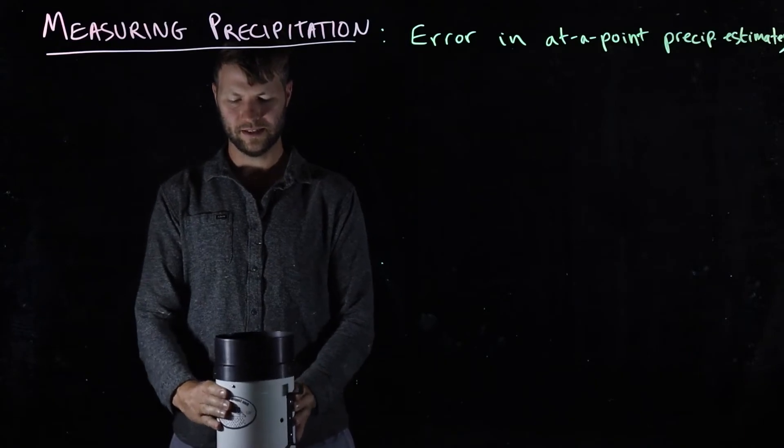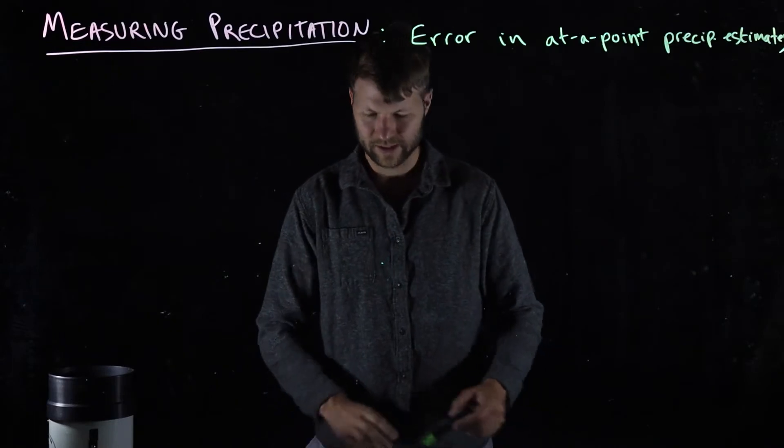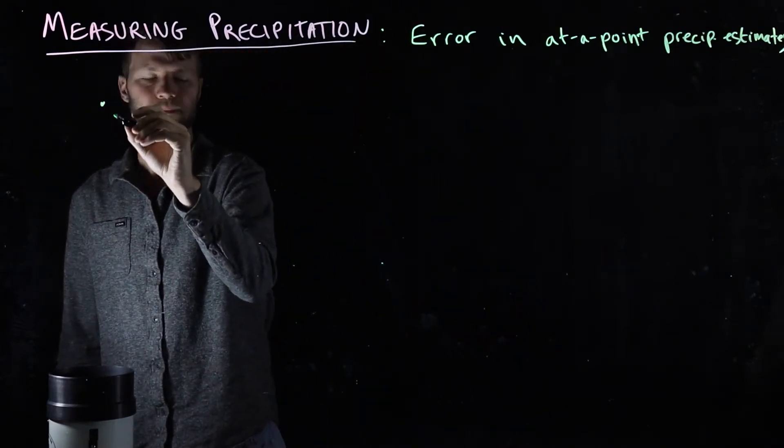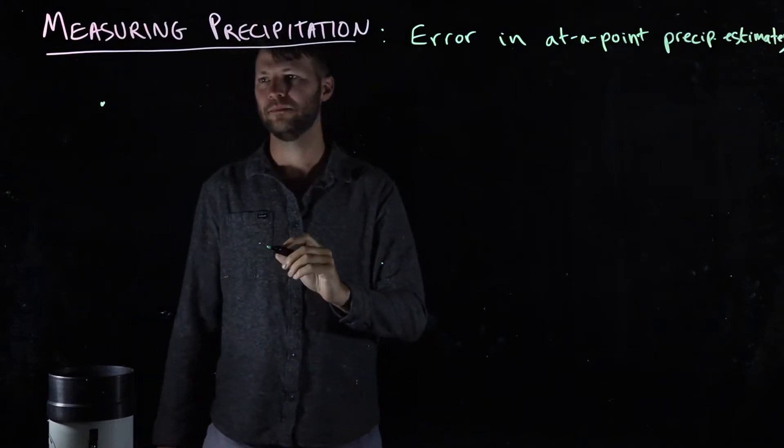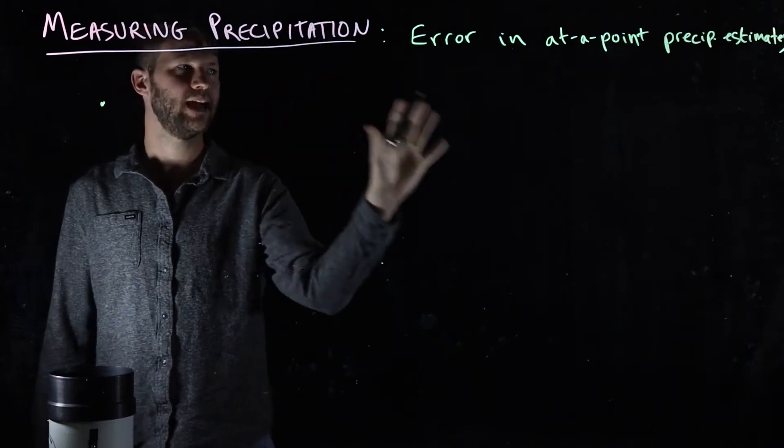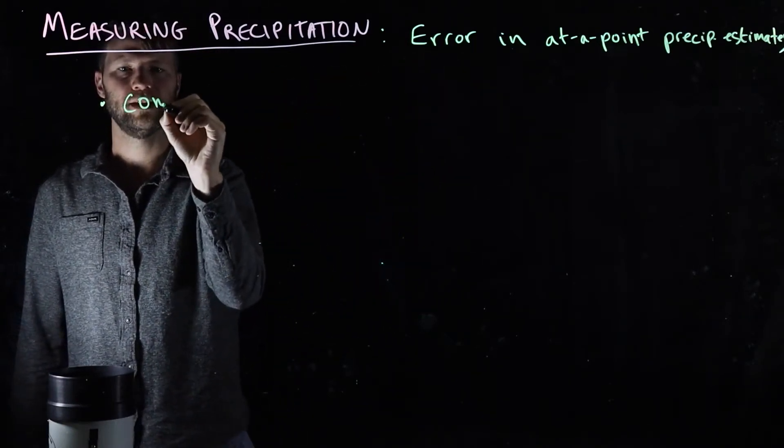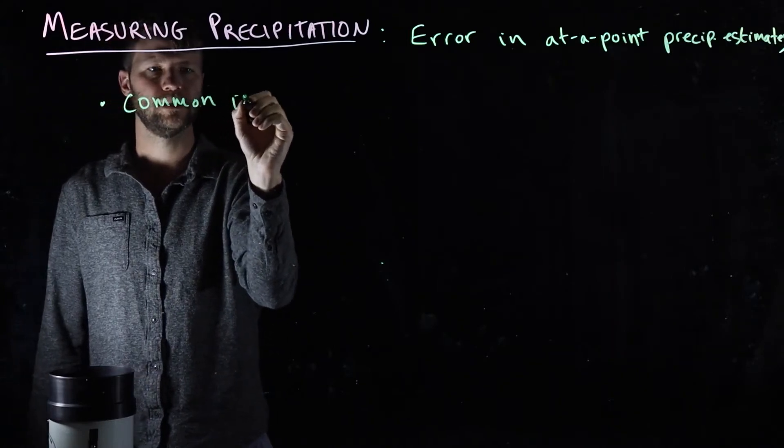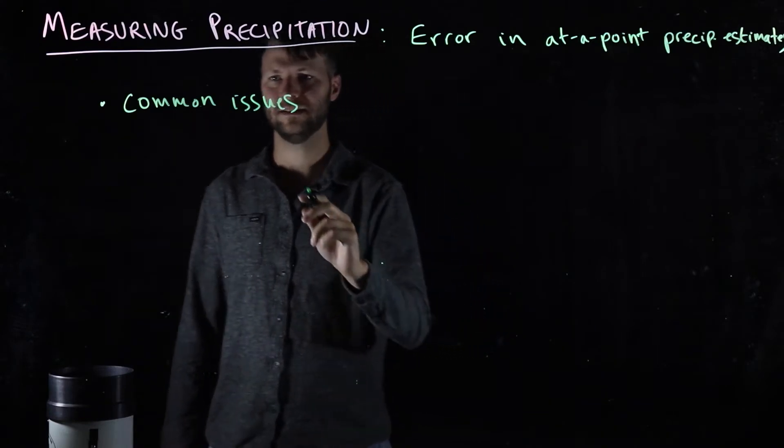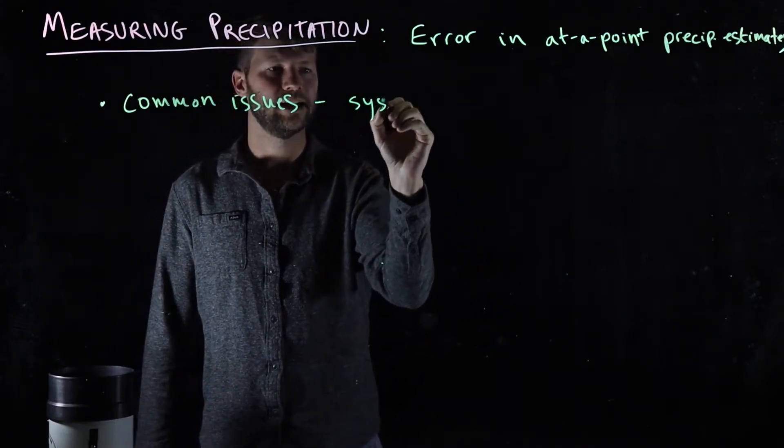So what are the ways that this thing can be in error? Well, the first one is that there may be obstructions that block the rain from getting in here. I'm going to categorize all of these error things as common issues because they're things that everyone needs to deal with, and the error that they tend to result in is systematic undercatch.